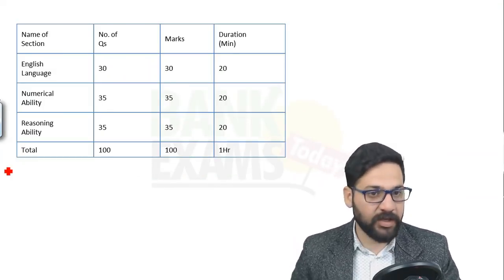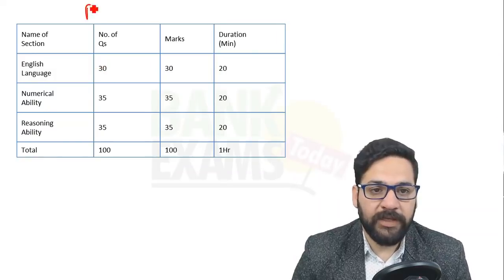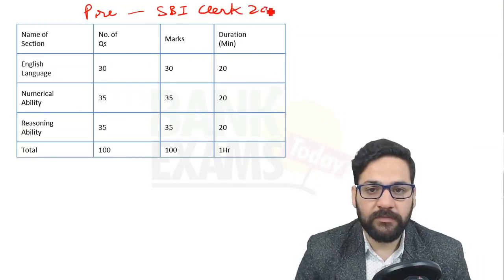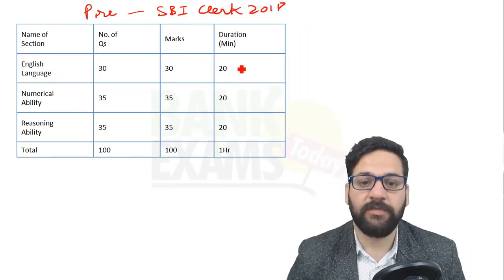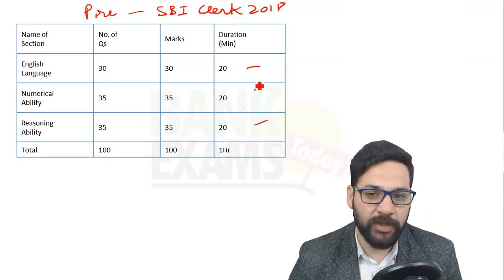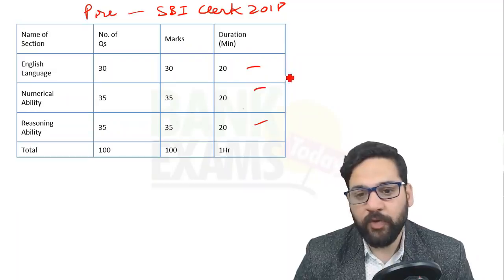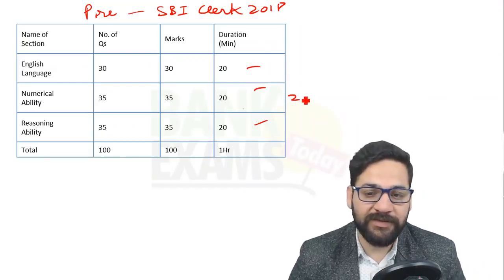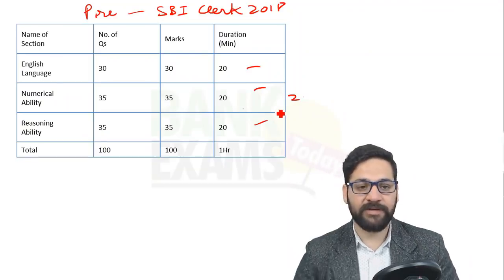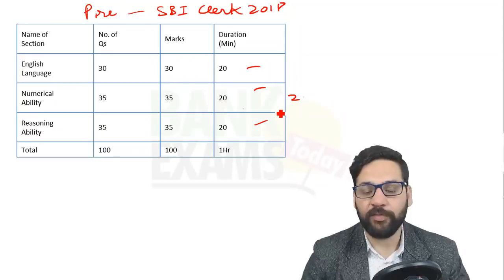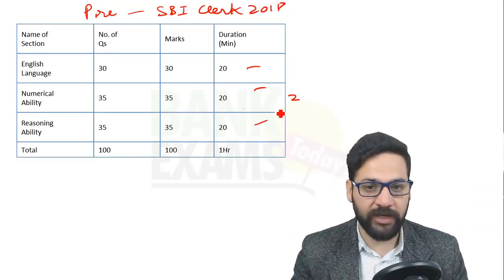This is the exam pattern of SBI Clerk prelim. There is sectional timing of 20 minutes each for English, Reasoning, and Quantitative Ability. What people used to do is devote 23 to 25 minutes to quant, 23 to 25 minutes to reasoning, and then 15 minutes to English — but that's not going to work now because there is sectional timing.